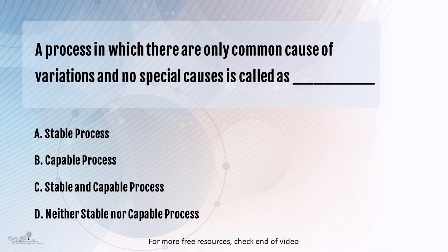What is an assignable cause? If we have out of control data points, then we expect that there is an assignable reason in the data set, a known reason in the data set, and then we try to go and investigate and find out what that reason could be by looking at our fishbone.